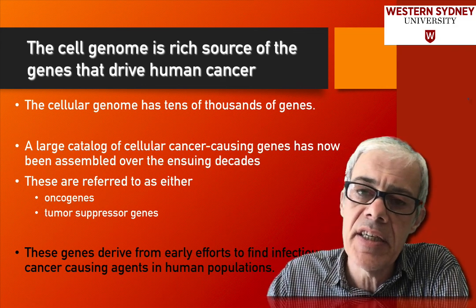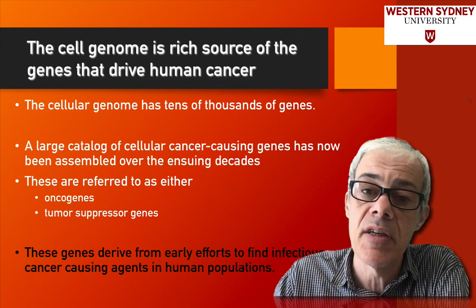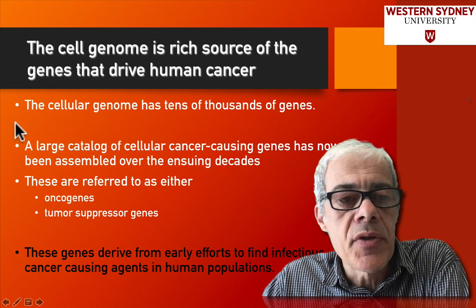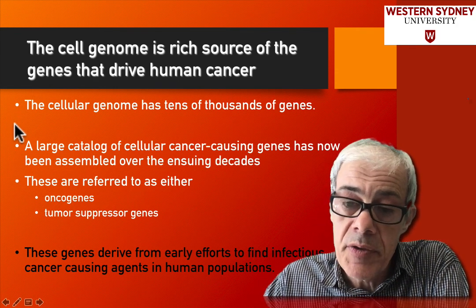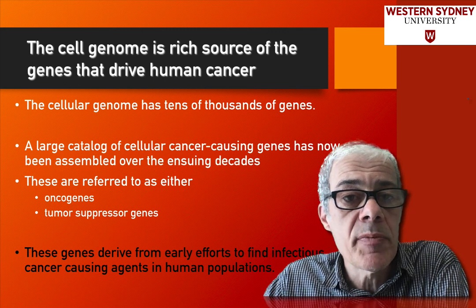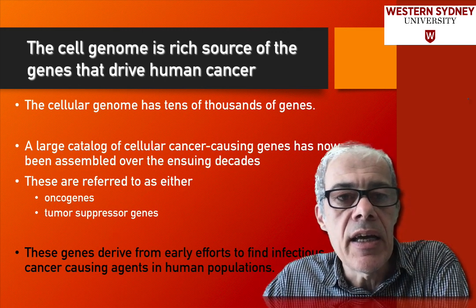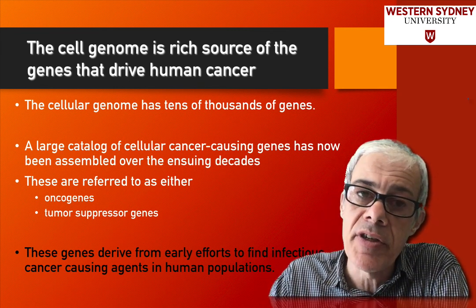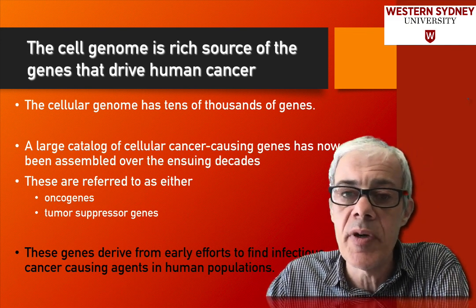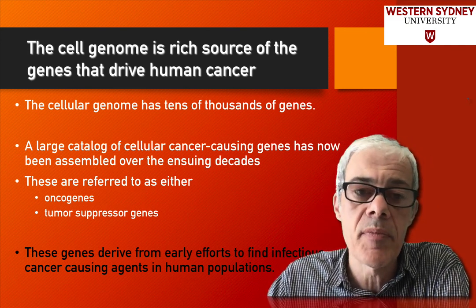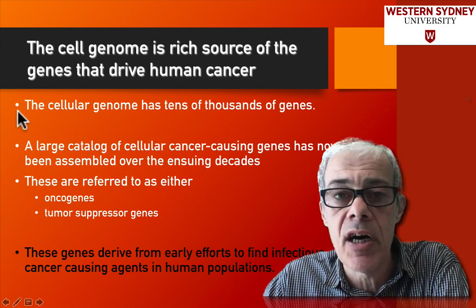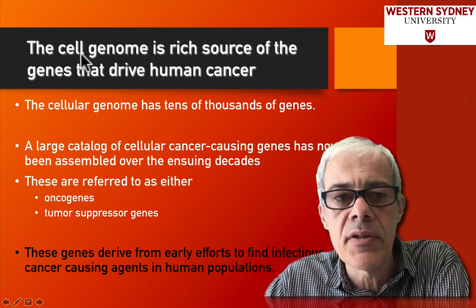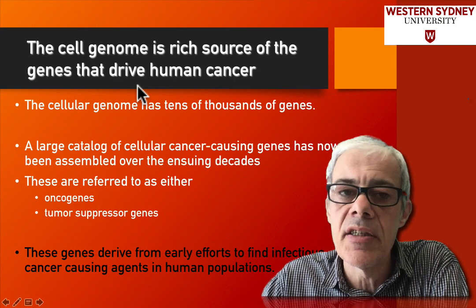People started to identify, characterize, sequence, express, and do experiments with these sequences. Initially it was thought that maybe viral sequences were causing cancers, but when people looked more deeply, it turned out that the sequences in the viruses were actually human gene sequences that had been picked up by the virus, and they were just being expressed inappropriately at inappropriate levels. It turns out that the cellular genome of human cells is actually the source of these genes that drive cancer.